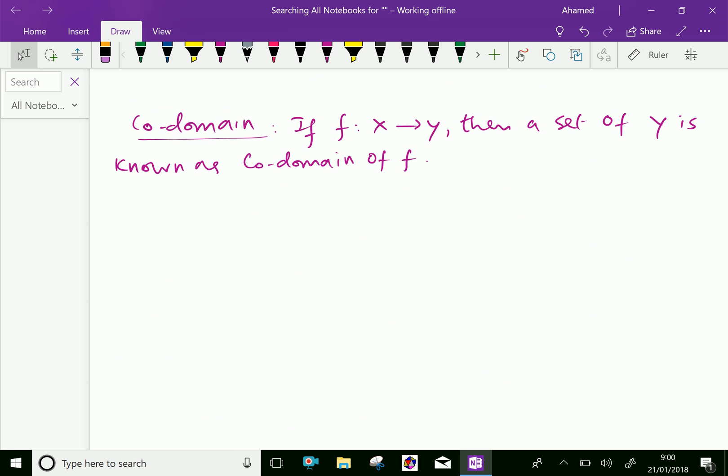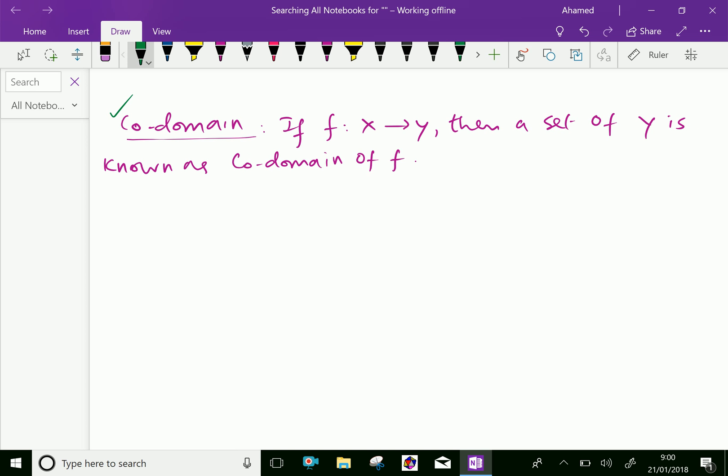Next one, co-domain. If f: x → y, then a set of y is known as co-domain of f.